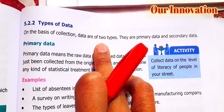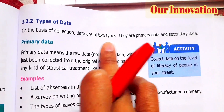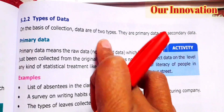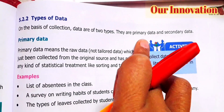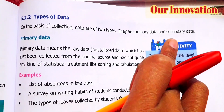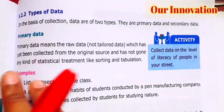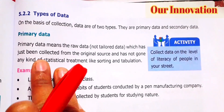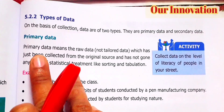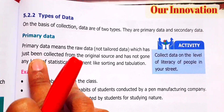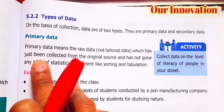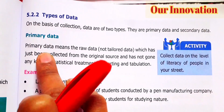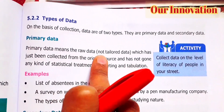Data are of two types: primary data and secondary data. Primary data means you are the one who collects the data first-hand. Nobody else has collected that data before. So primary data means the raw data.